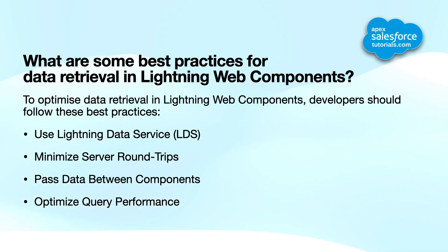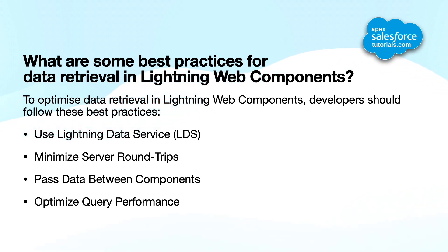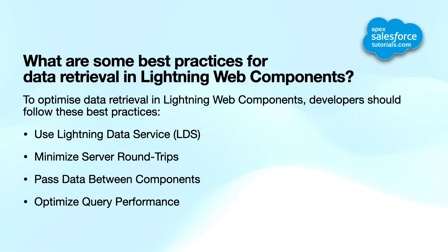The fourth question is: what are some best practices for data retrieval in Lightning Web Components? To optimize data retrieval, developers should follow these best practices. First, use Lightning Data Service or LDS whenever possible, as it provides automatic caching and data management capabilities. Second, minimize server round trips by limiting fields and rows in result sets, implementing pagination for large data sets, and lazy loading occasionally accessed data.